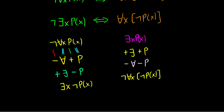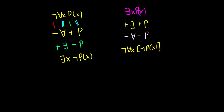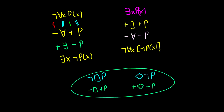If you ever get to modal logic in the future, you'll find the same pattern: '¬□P' is the same as '◇¬P'. Using the same trick, 'minus-box plus-P' becomes 'plus-diamond minus-P'. These abstract connections appear throughout your logic career, so it's useful to see them in advance.